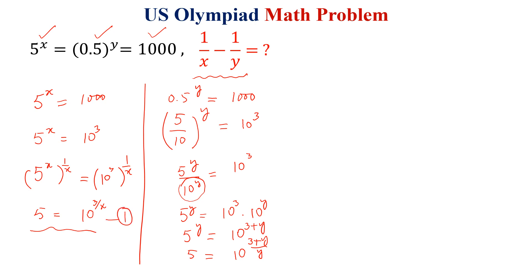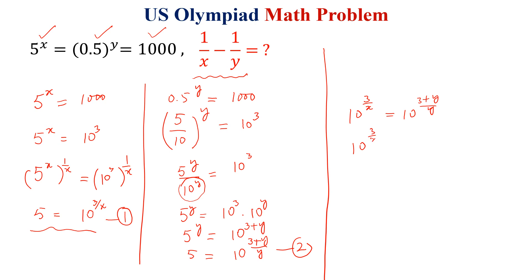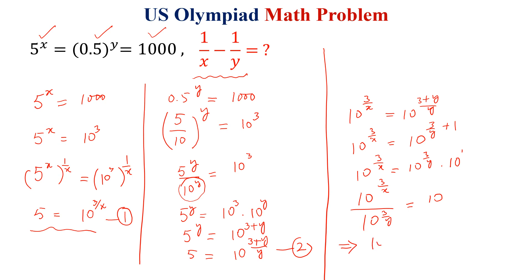If equation 1 gives 10 to the power (3 over x) and equation 2 gives 10 to the power ((3 plus y) over y), both are equal to 5. So we can write 10 to the power (3 over x) is equal to 10 to the power (3 plus y) over y. This implies 3 over x equals 3 over y plus 1, so 10 to the power (3 over x) divided by 10 to the power (3 over y) is equal to 10, giving 10 to the power (3 over x minus 3 over y) equals 10 to the power 1.